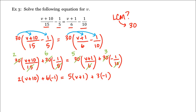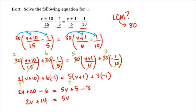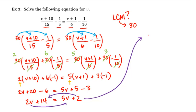Now let's distribute the 2 and the 5 through, which gives us 2v plus 20 minus 6 is equal to 5v plus 5 minus 3. Combining like terms, we have 2v plus 14 is equal to 5v plus 2. We'll bring the 2v to the right and the 2 to the left to avoid a negative coefficient, giving us 14 minus 2 is equal to 5v minus 2v, or 12 is equal to 3v. Dividing both sides by 3 gives us our answer of v is equal to 4.